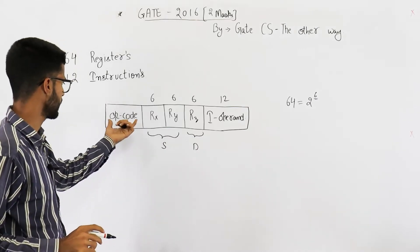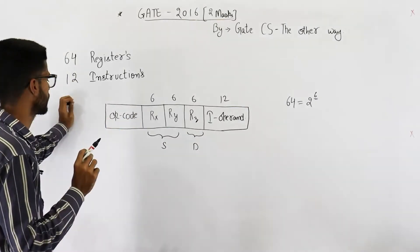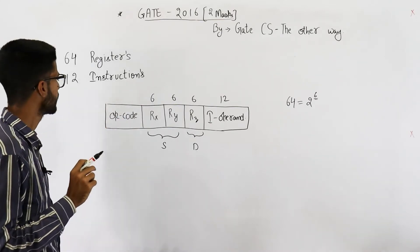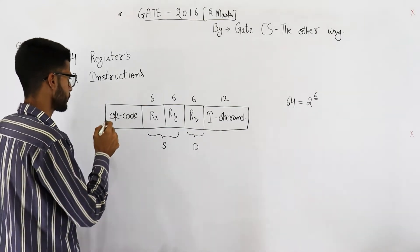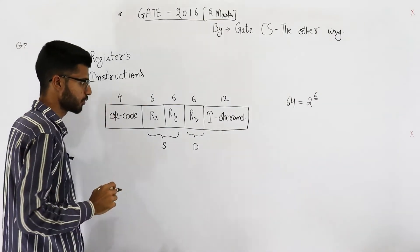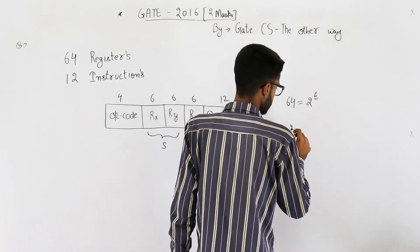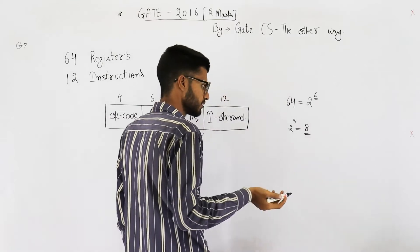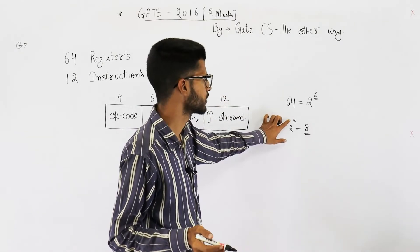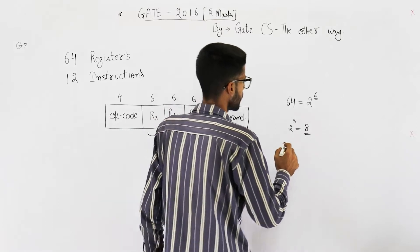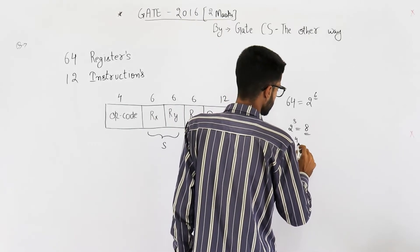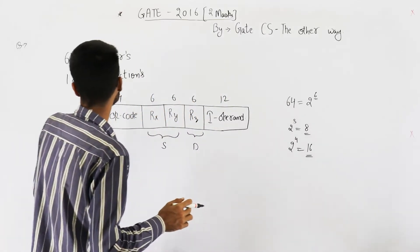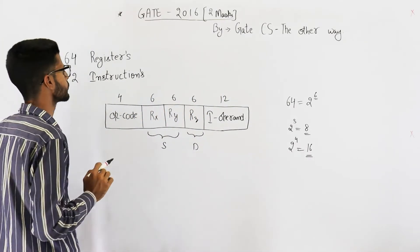Now, let's find the length of this opcode field. Opcode has to identify one of these 12 instructions. That means we need at least 4-bits in this opcode. How 4? Because with 3-bits, you can identify one out of 8 items or 8 instructions. That means using 3-bits, you cannot support 12 instructions.